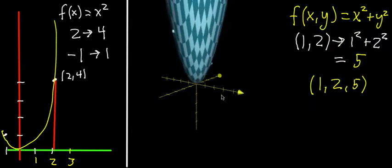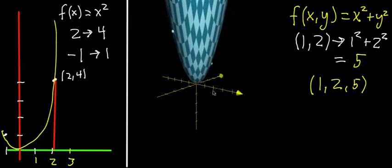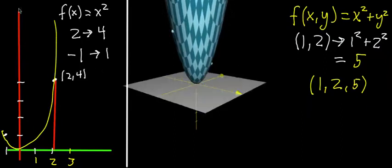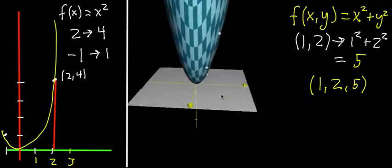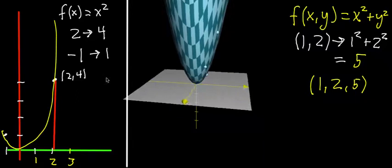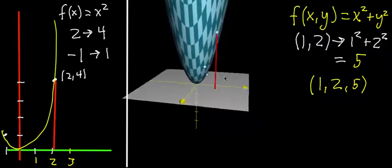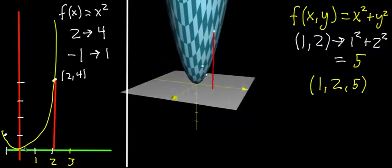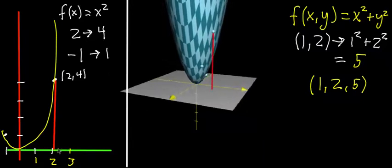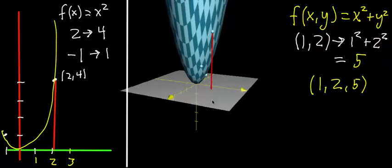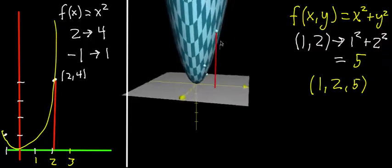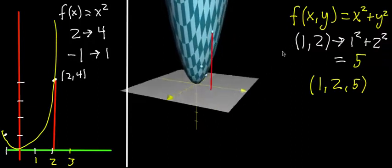And now, the inputs like one, two, we think of as being on the xy plane. So you think of the inputs living here. And then what corresponds to the output is that height of a given point above the graph. So it's very similar to two dimensions. We think of the input as being on one axis, and the height gives the output there.